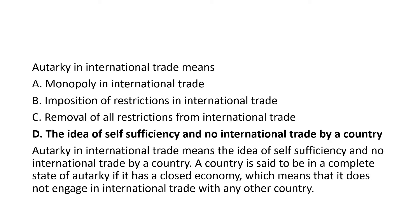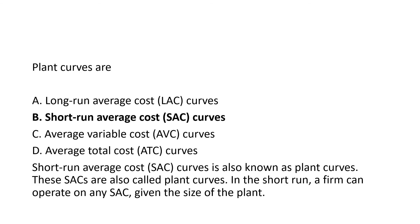Coming to autarky — this concept is mainly seen in international economics. Autarky means the idea of self-sufficiency and no international trade by a country. A country is in a complete state of autarky if it has a closed economy, meaning it does not engage in international trade with any other country.